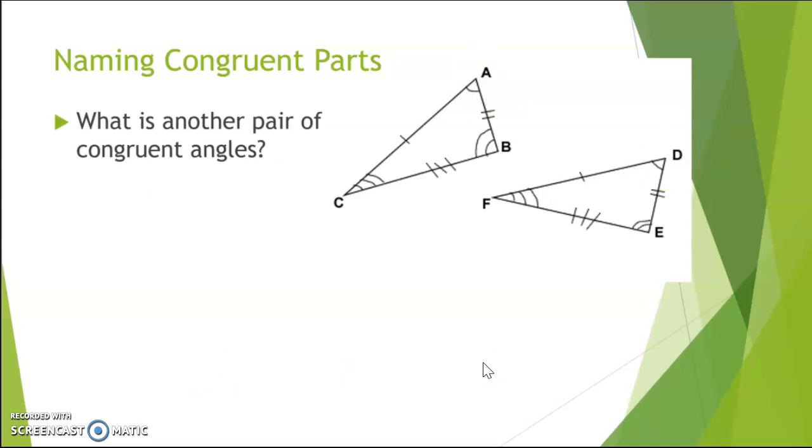What is another pair of congruent angles? Based on the two markings, angle B is congruent to angle E.